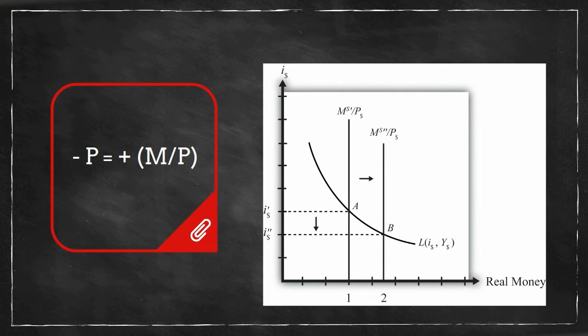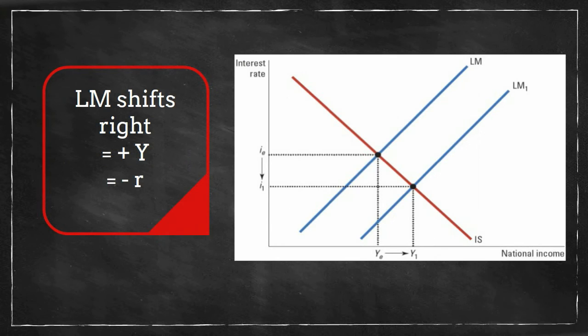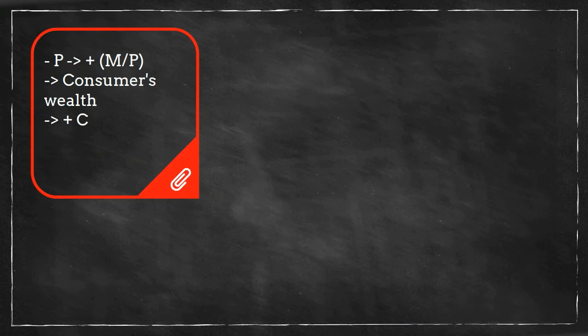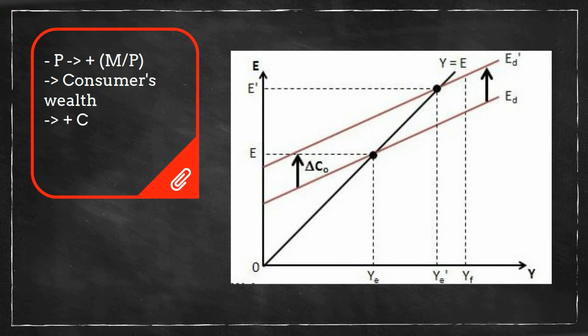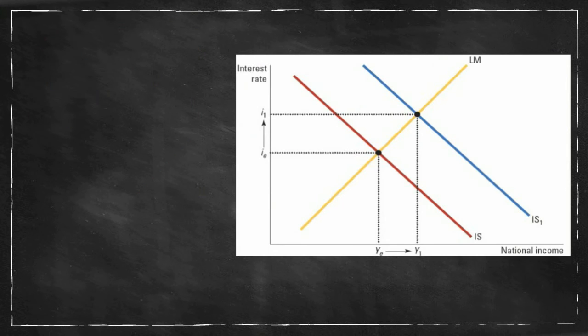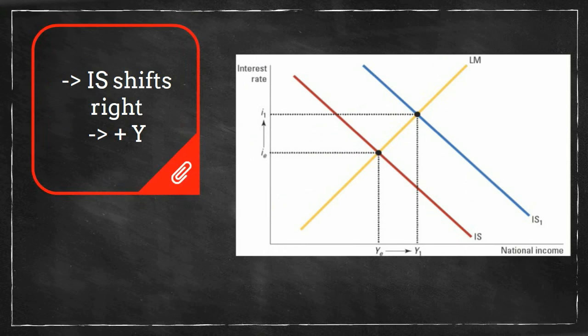Assuming that prices are flexible in the economy, if prices go down, more money becomes available to consumers for spending, which causes the economy to grow. As interest rates are lowered, consumers will demand more money for consumption. Therefore, the LM curve will shift to the right. An increase in money supply will result in an increase in spending and consumption.